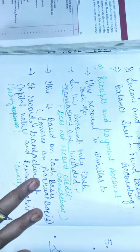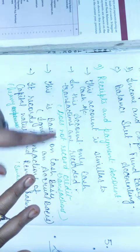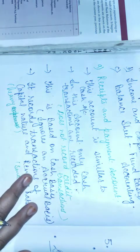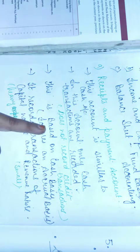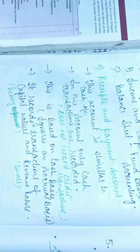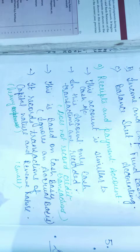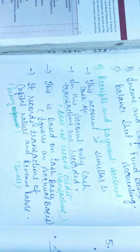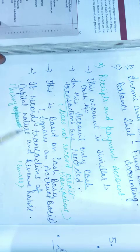In receipt and payment account, only cash transactions are recorded. There are two methods: first is the cash method and the second is the accrual basis method. The accrual basis method is what we will discuss in this video. This account is cash basis based and it records transactions of both capital nature and revenue nature.